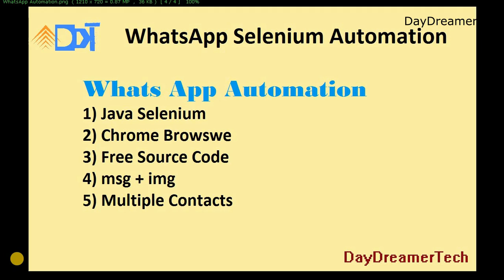In this video I am going to tell you how we can make WhatsApp automation using Selenium code. To run this code I need a Chrome browser and ChromeDriver to automate the browser. I am giving you the source code, so don't worry about that. You can also edit the source code. In this video I am going to show you how to send messages and images using this application.